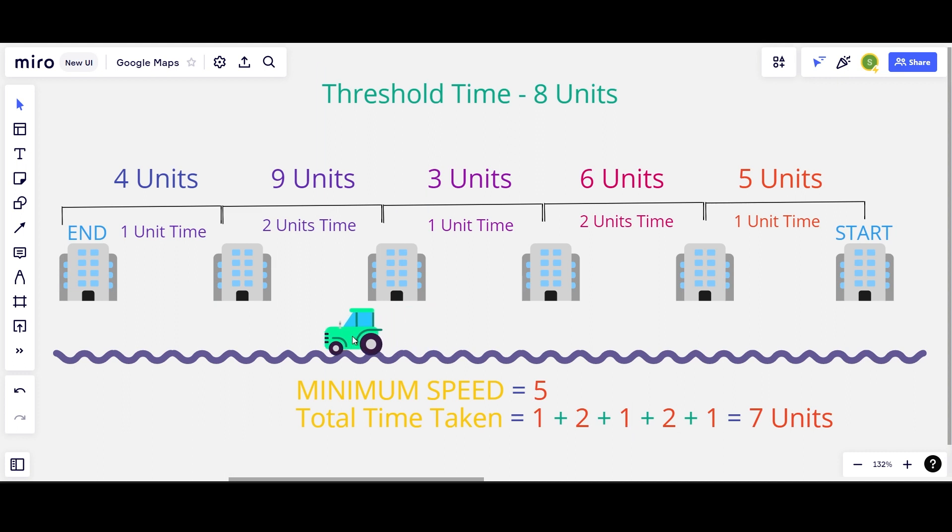We can again cover the 9 units distance in 2 units time and finally we can cover the 4 unit distance in 1 unit time. So the total time taken is 7 units which is less than the threshold of 8 units. So 5 units speed is a valid speed to make the entire trip and so are the bigger values of speed 6, 7, 8, 9 and so on, but the minimum possible speed is 5 units and hence 5 would be the answer.